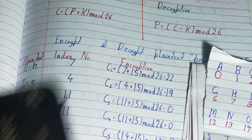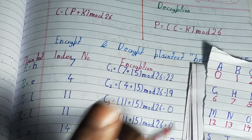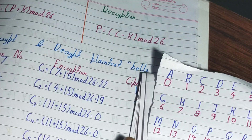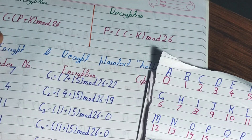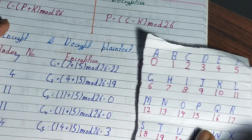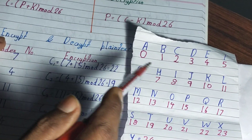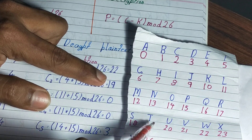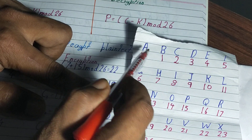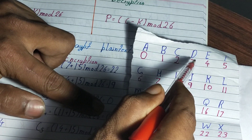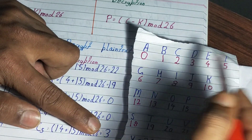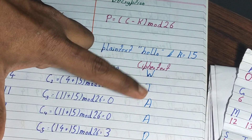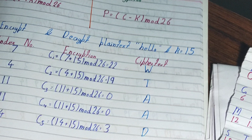Once we have those mod values, we match them back to the index table to get the ciphertext letters. For 22 we get W, for 19 we get T, for 0 we get A, for 0 we get A, and for 3 we get D. So our encrypted ciphertext for 'HELLO' is W, T, A, A, D. That's all about encryption.